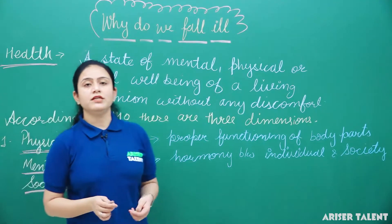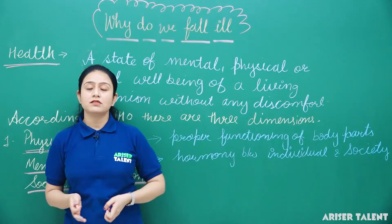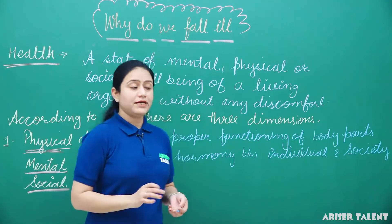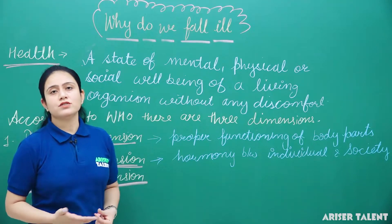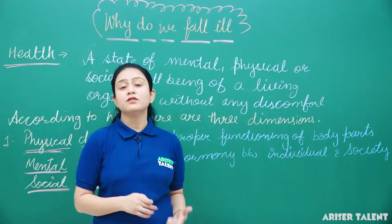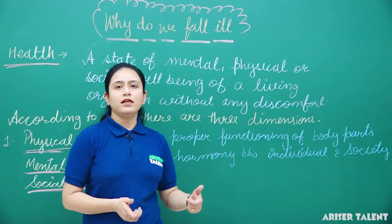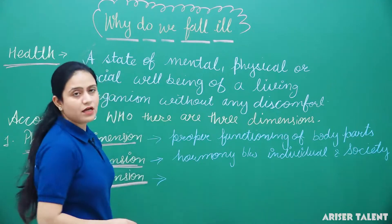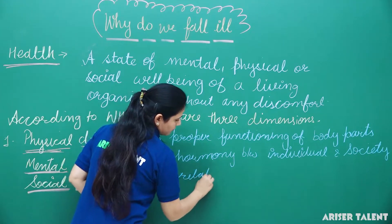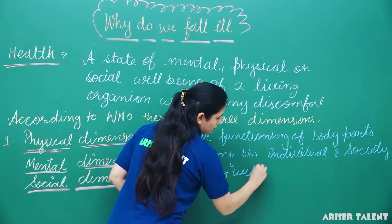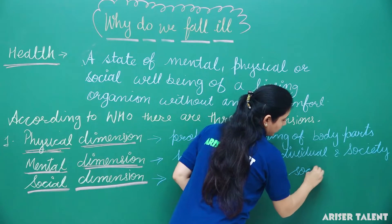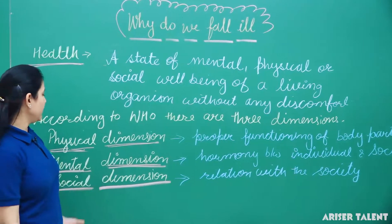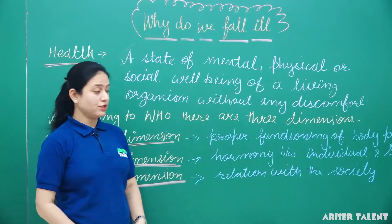Social dimension means our relationship with society. As we know, all humans are social animals — they live in a society. If you are living in a clean society and have good relationships with your neighbors, you will feel happy and be healthy. So, physical, mental, and social dimensions are the factors which affect health.